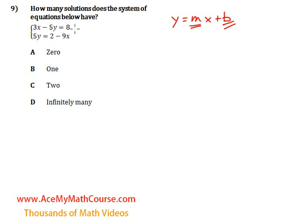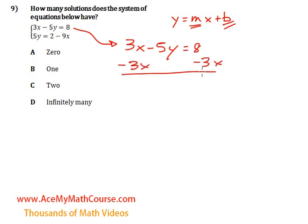So okay, let me just rearrange the top equation first. Let's isolate y, so subtract 3x from both sides of the equation. 3x minus 3x is zero, so we get negative 5y equals negative 3x plus 8.